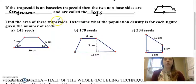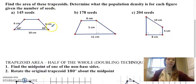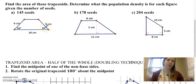Find the area of these trapezoids. Determine what the population density is for each figure given the number of seeds. So first we have to find the area.